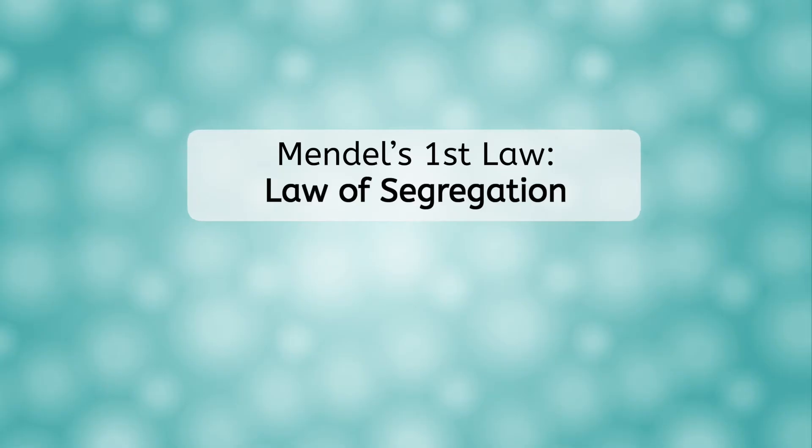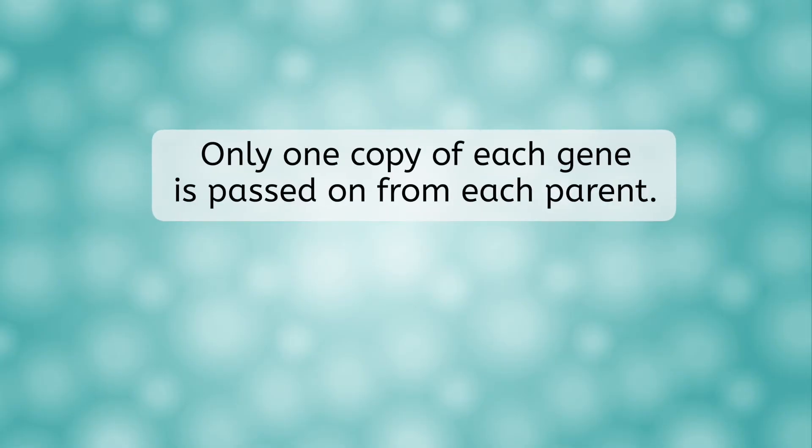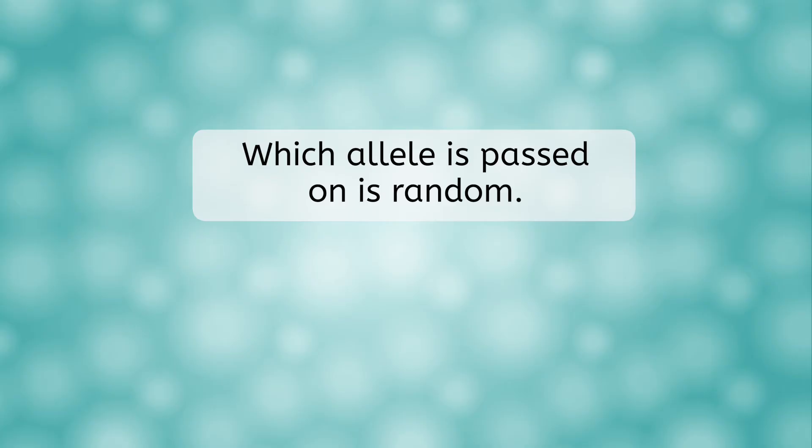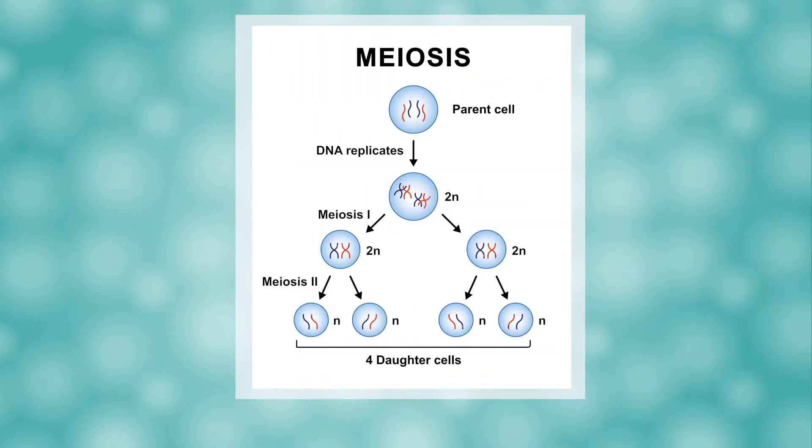He used this pattern to establish a set of laws for inheritance that are still widely applied today. His first law is known as the law of segregation. Only one of the two copies of the gene present in each parent's cell would be passed on to the offspring. And which copy or allele is passed on is completely random. This relates to what we learned about meiosis in the last unit. Remember that in meiosis, the chromosomes join with their homologous pairs. Then only one of each pair goes to each cell. Then the chromatids separate, leaving us with four haploid and unique daughter cells. The assortment of chromosomes is completely random, just as Mendel found.